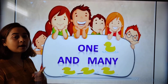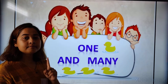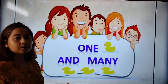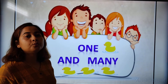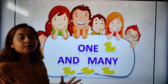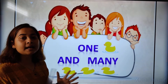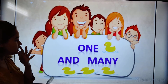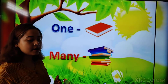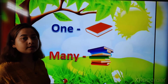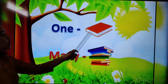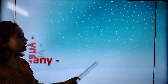So we all know about one. One means only one. For example, one book, one car, one bag. And if it is more than one, we call it many. Many means more than one. One means only one. Many means more than one.